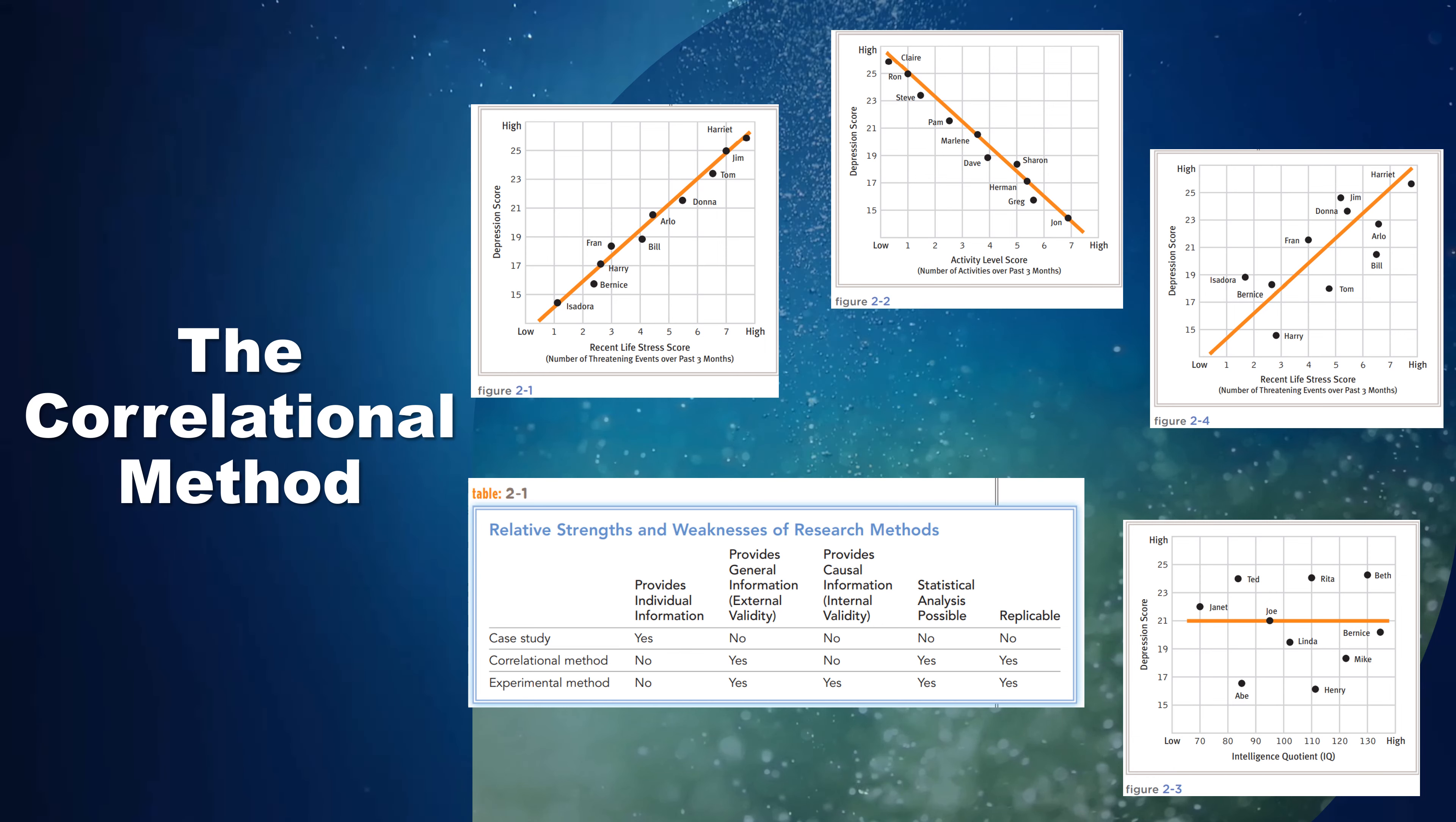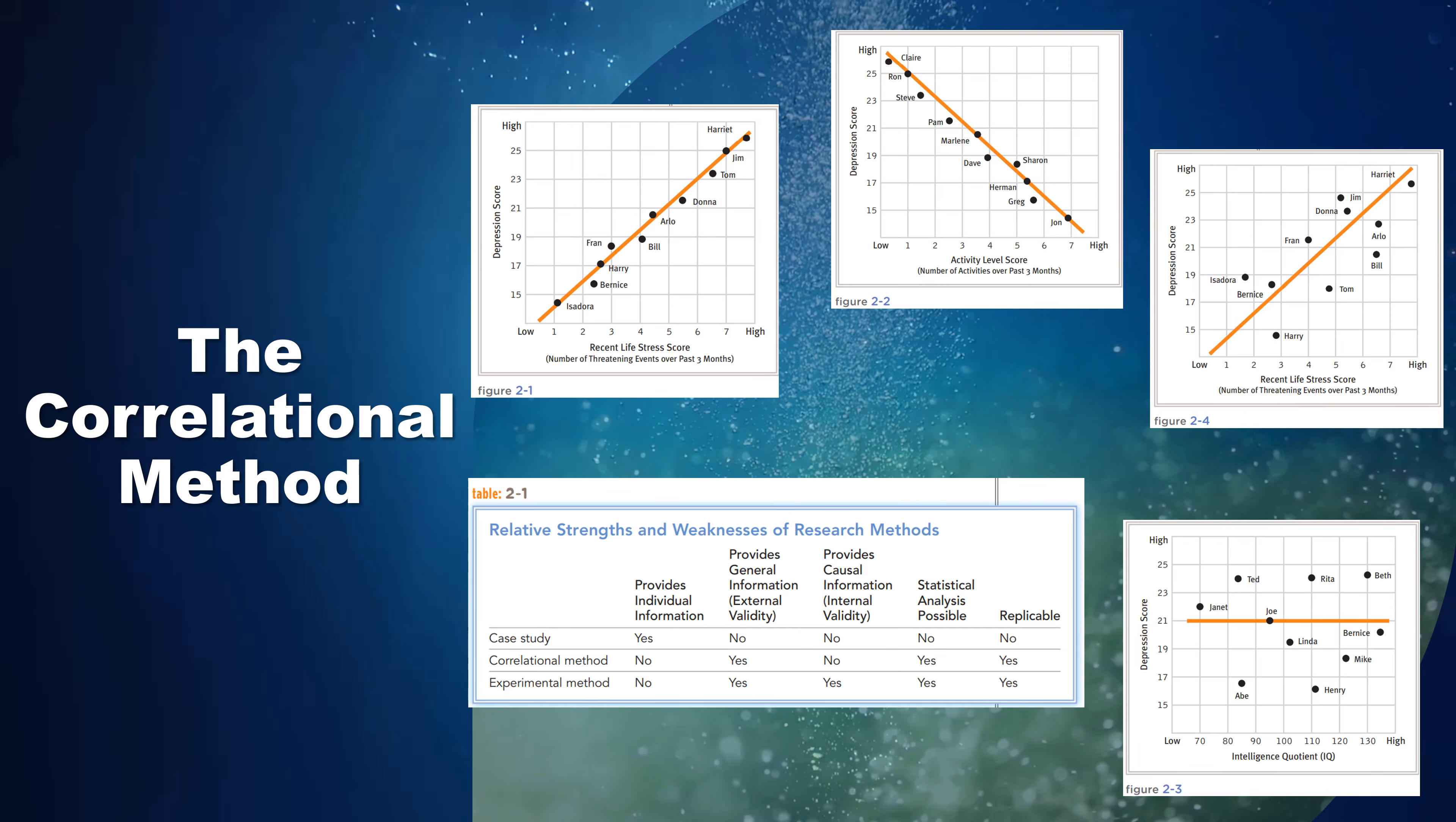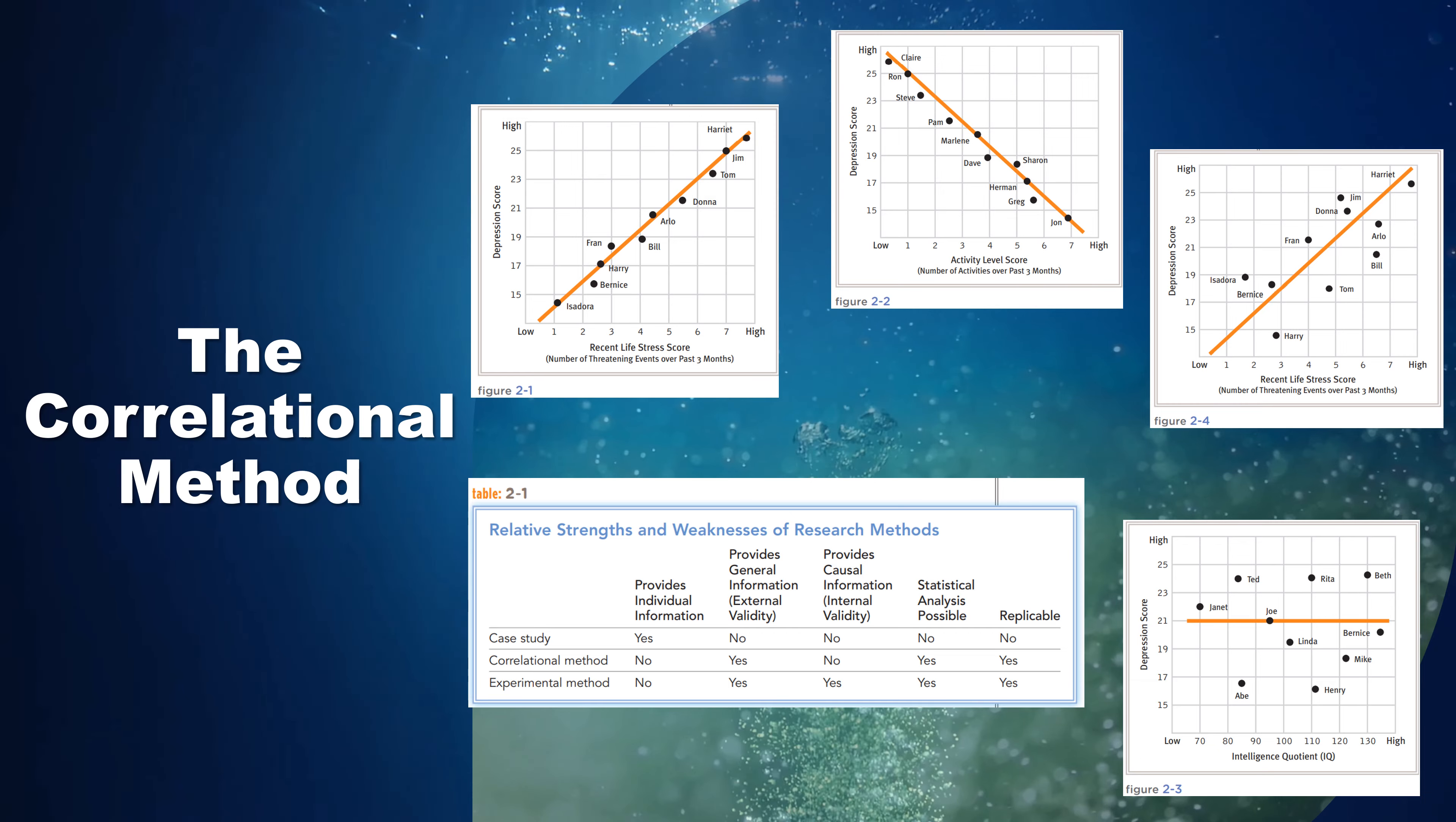To test this particular question, researchers have collected life stress scores, for example, the number of threatening events experienced during a certain period of time, and depression scores. For example, scores on a depression survey from individuals and have correlated these scores.